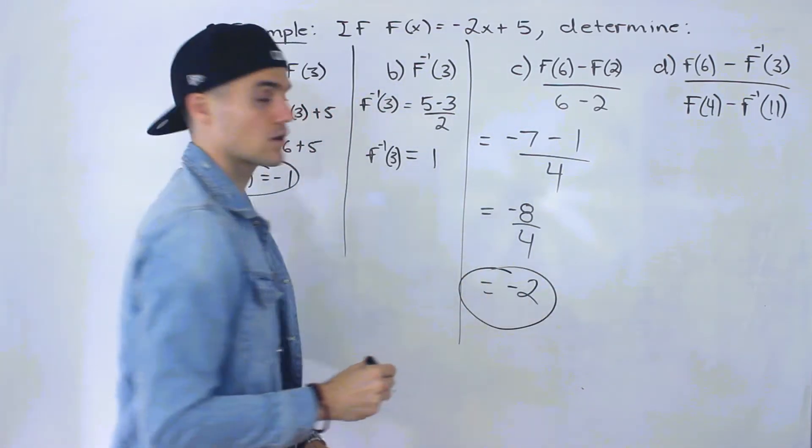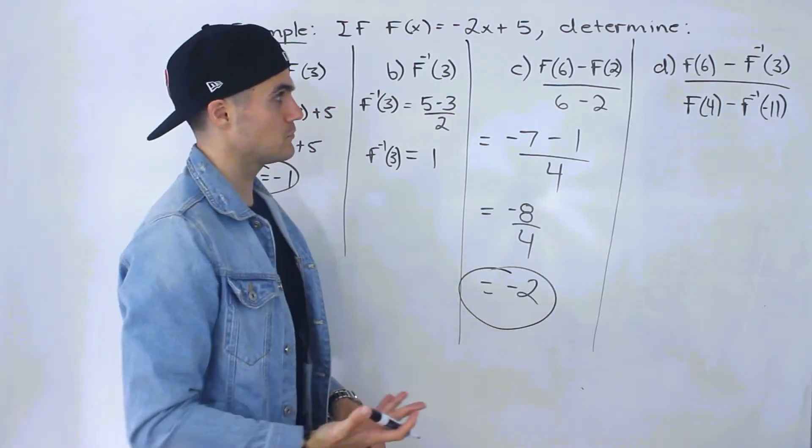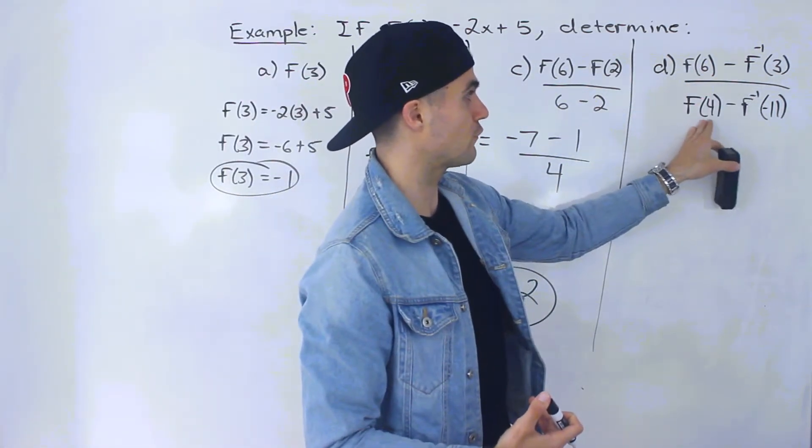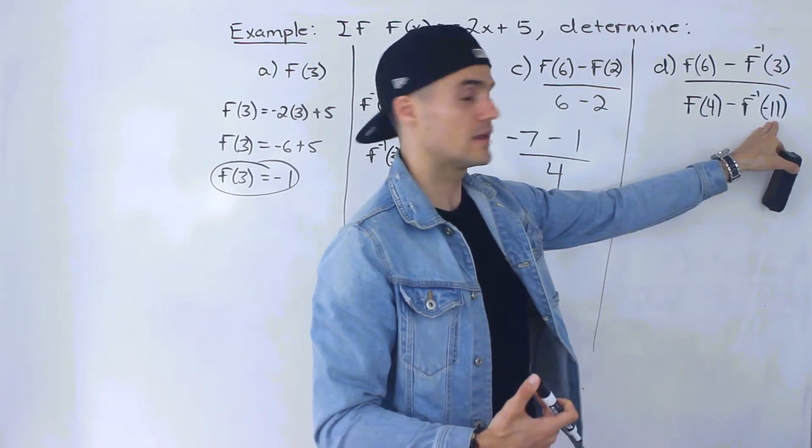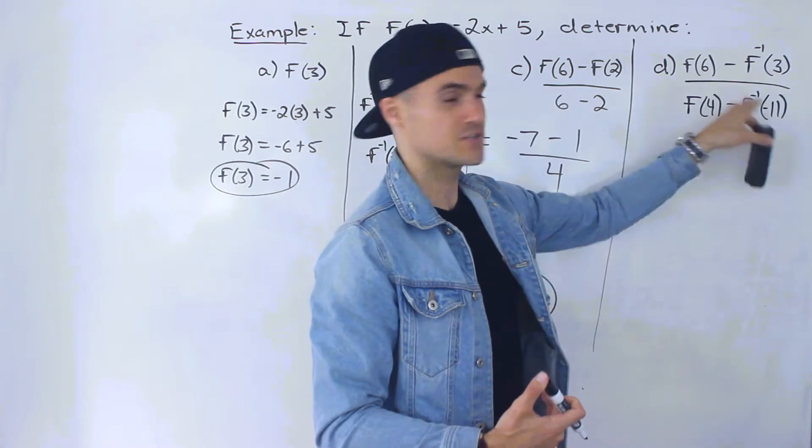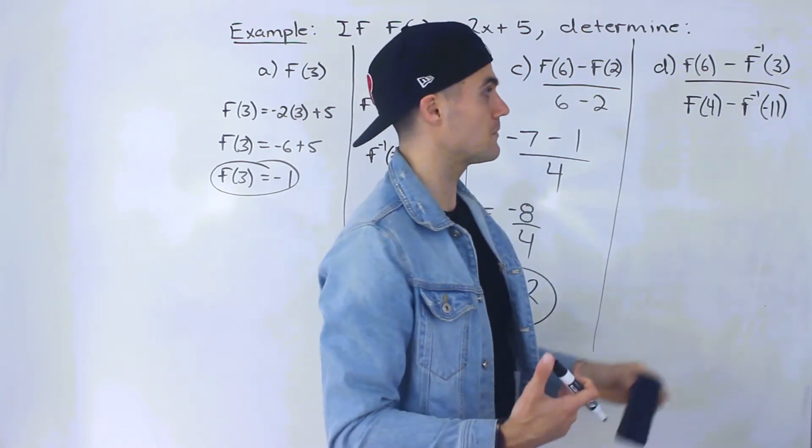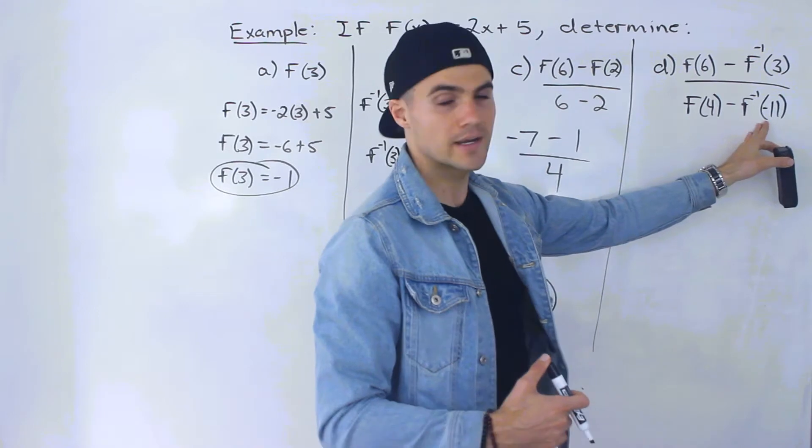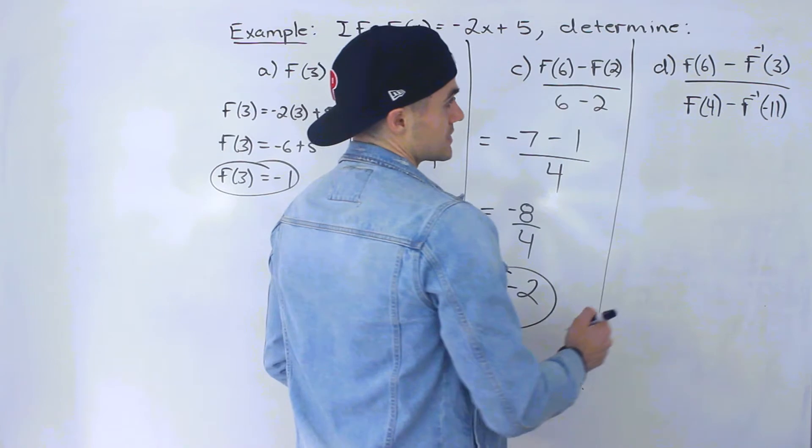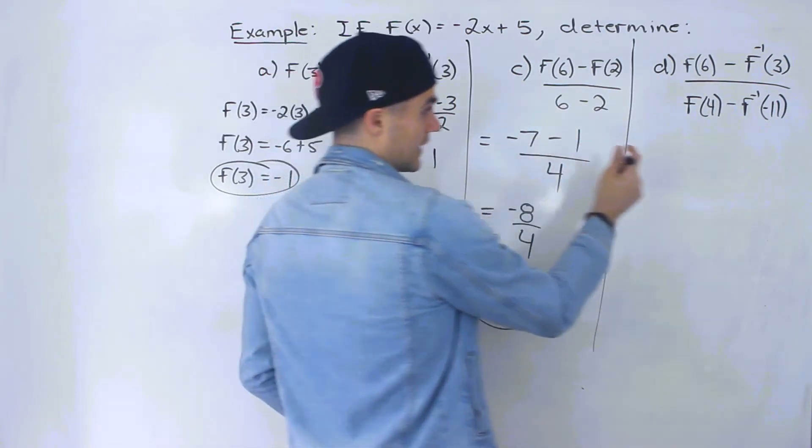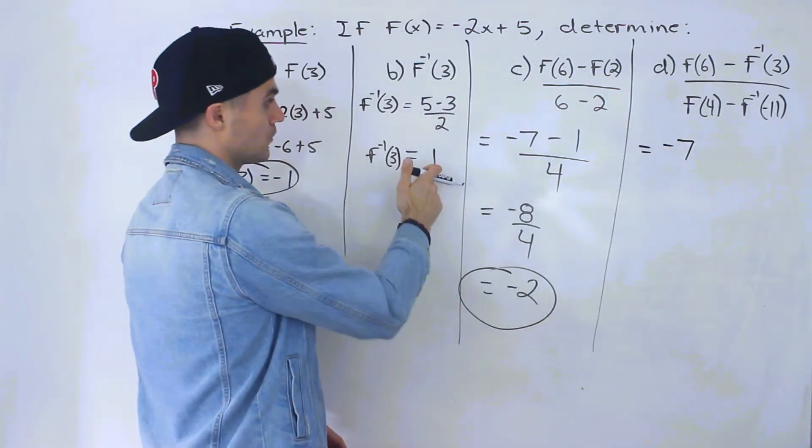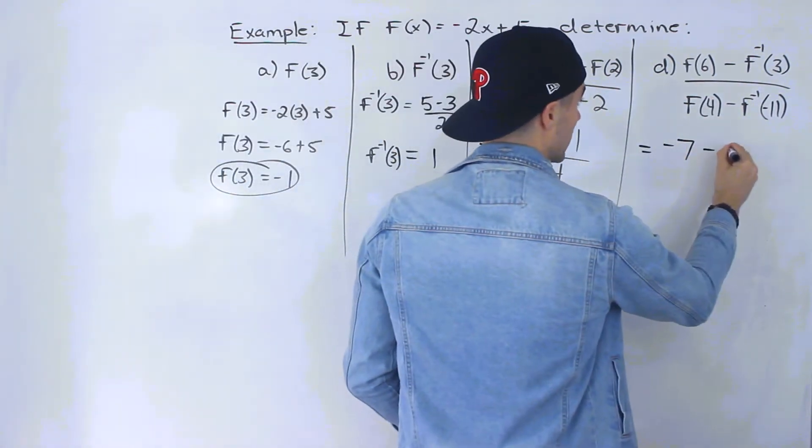So that is the answer for part c. And then moving on to part d, we have [f(6) - f inverse of 3]/[f(4) - f inverse of -11]. Now, this here was written as positive 11 before. But if you did that, you would actually get zero in the denominator, which would make it undefined. I meant to write -11 here. So this got changed just as a heads up. So f(6), we already know it's -7. f inverse of 3, we already know it's 1. So this would be minus 1.